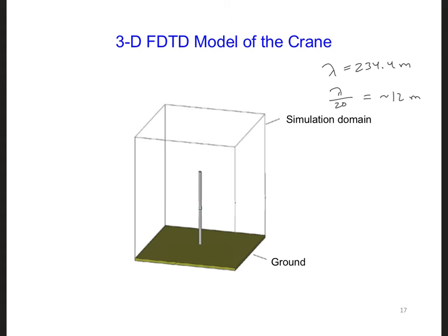But these are awfully large grid cells for modeling a crane. We could model the crane with what's called a thin wire model, but that will take extra time to develop. Instead, let's just choose a reasonable grid resolution based on the dimensions of the crane rather than on the wavelength of the signal.